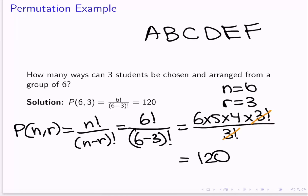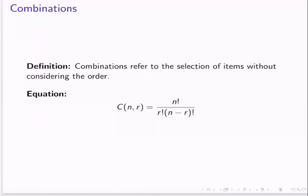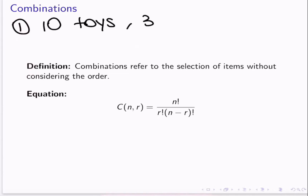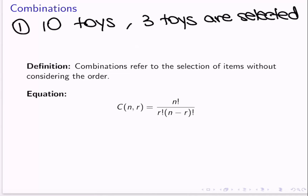Next, that leads me to combinations. Combinations refer to the selection of items without considering the order. I'm going to give a couple of examples of when we might not care about the order. Let's say, for example, that my daughter has ten toys and she can select three toys to go on vacation with her. In this case, does the order of the toys matter?